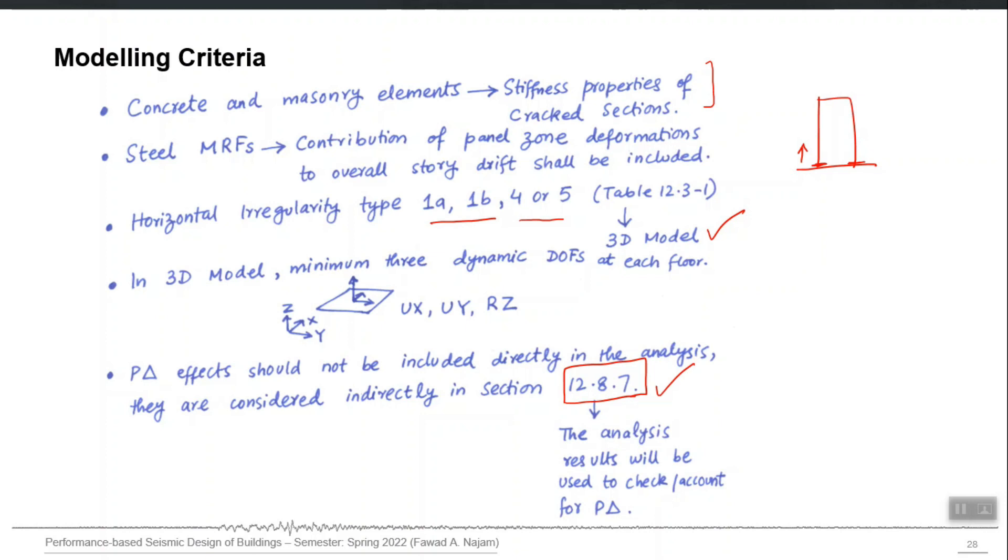There are provisions available about how you should construct the vertical ground motion spectrum. Once you construct the spectrum for horizontal direction, the provisions are available how you modify it to convert it to vertical direction, and then modify your ground motion according to that vertical spectrum and then apply those ground motions in the vertical direction.